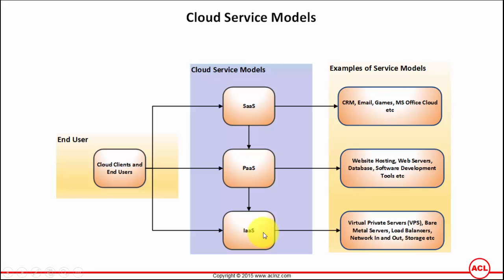An IaaS example would be hosting an Oracle eBusiness Suite Server or Oracle Fusion Application Server. The advantage of all cloud models is that you can access those services via the internet from anywhere in the world, and you don't have to worry about maintenance, asset cost, depreciation, or manpower. Other IaaS examples include bare metal servers — the same physical machine you'd have on-site, but hosted with a cloud vendor so you don't have to handle its physical security and maintenance.